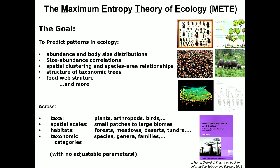We want this theory to be broadly applicable — across taxa, so one theory for plants, arthropods, birds, all of them. We don't want one theory for small patches and another for biomes at multi-square-kilometer scale. We don't want one theory for forests and another for deserts. And we want the theory to make predictions with no adjustable parameters. So we're starting with a tall order, and I'm going to try to show you that we can achieve it.